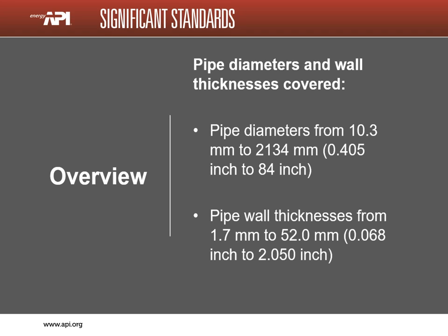The 5L specification covers a wide range of pipe diameters from 0.405 inch to 84 inches. Pipe wall thickness also has a wide range from 0.068 inch to over 2 inches. Note that all the different diameters cannot be made in each thickness. The ratio of diameter to thickness is known as the D to T ratio. Industry professionals do not agree on an exact range for D to T ratio.